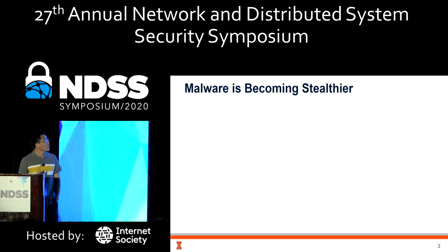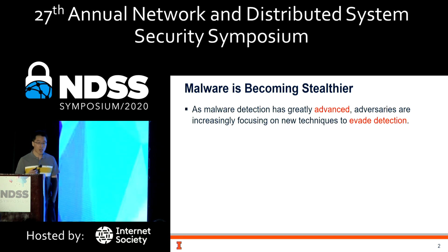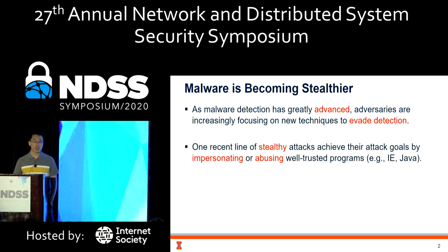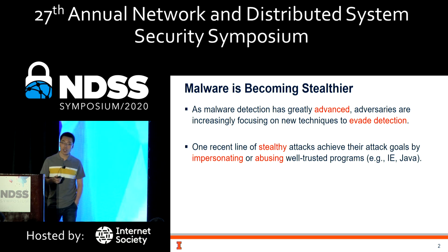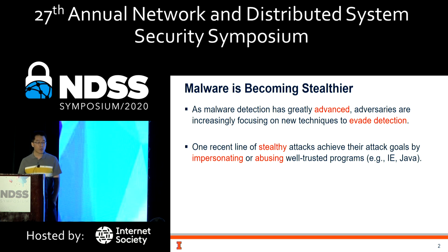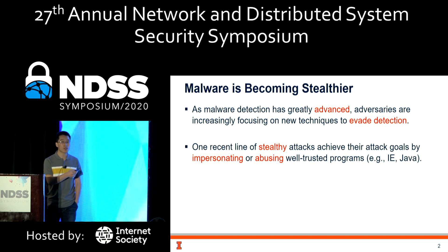Malware today is becoming much more stealthy. This is because malware techniques have greatly advanced — attackers keep improving their techniques to evade detection. One recent line of stealthy attacks achieves attack goals by impersonating or abusing well-trusted programs, for example, the IE browser or Java, because these programs are on the whitelist of an enterprise and are less guarded.